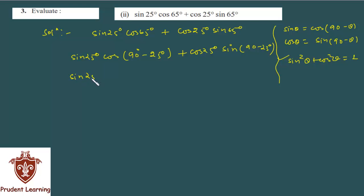Now look, sin 25 degree as such. Cos(90 - θ) is what? Cos(90 - θ) is sin θ and here theta is 25 degree. Therefore, cos(90 - 25) is sin 25 degree. Plus of cos 25 degree as such. Now sin(90 - θ) is what? Cos θ. Therefore, sin(90 - 25) can be written as cos 25 degree.